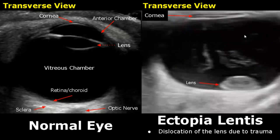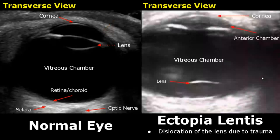Ectopia lentis refers to dislocation of the lens, mostly occurring due to trauma. Here we see the lens in the posterior aspect of the vitreous chamber. This is another case of ectopia lentis — we see the lens displaced from its original location.